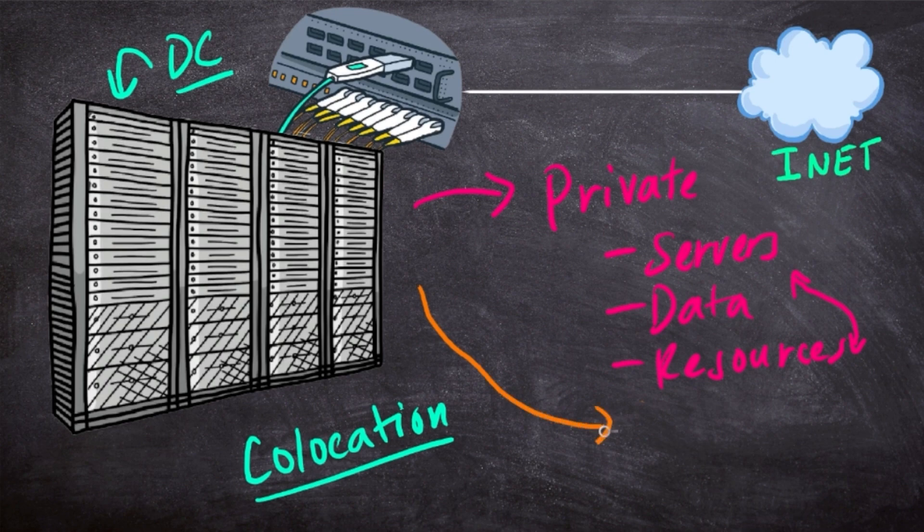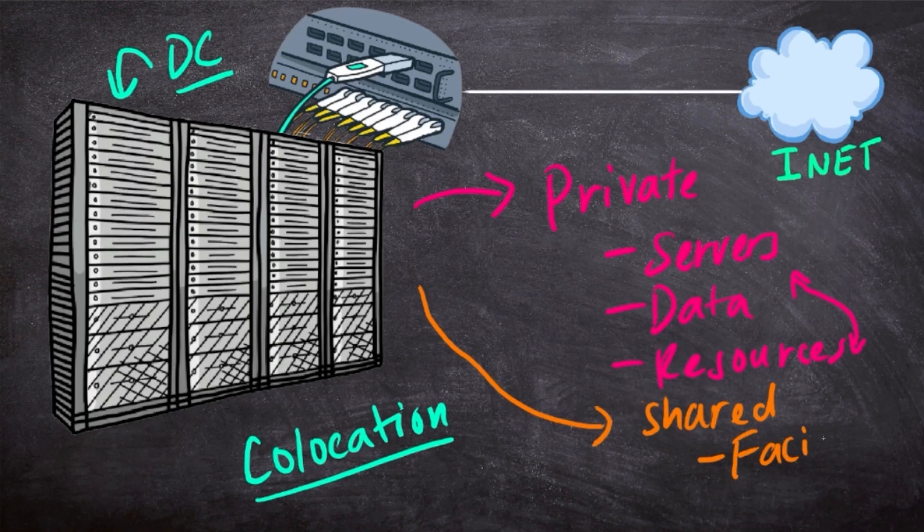So then, what here would be shared infrastructure? Well, shared infrastructure would be things like your facilities. So like I mentioned earlier, electricity, cooling, land, all of those things, all of those are costs of the co-location providers. So they're the ones paying it, and everyone shares a common set of facilities.